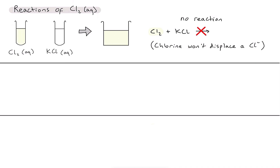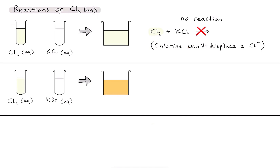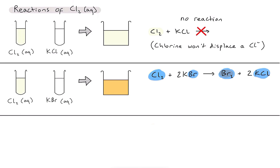Now let's take chlorine solution and add it to potassium bromide solution. In this case you can see quite a clear colour change — we've now produced that distinctive orange colour which indicates we have produced bromine, Br₂, in my solution. What's actually going on here? The chlorine has replaced or displaced the bromide ion in the potassium bromide, forming bromine hence the orange colour, and leaving potassium chloride in solution. We call the equation showing only the species that have actually changed an ionic equation.